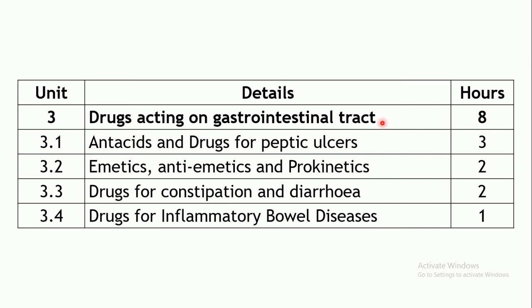The third unit is drugs acting on the gastrointestinal tract, allotted 8 hours. The first chapter covers antacids and drugs for peptic ulcer — antacids along with H2 blockers, proton pump inhibitors, and other drugs utilized for peptic ulcer treatment. Three hours are allotted for this chapter.